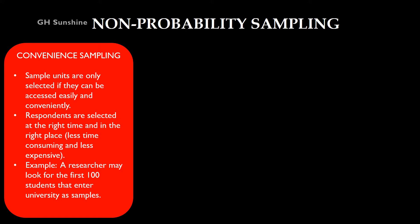The first non-probability sampling is convenience sampling. Sample units are only selected if they can be accessed easily and conveniently. The researcher may select respondents at the right time in the right place. The advantage is less time and less expensive. For example, a researcher may look for the first 100 students that enter university as samples — anybody, as long as they are among the first 100.